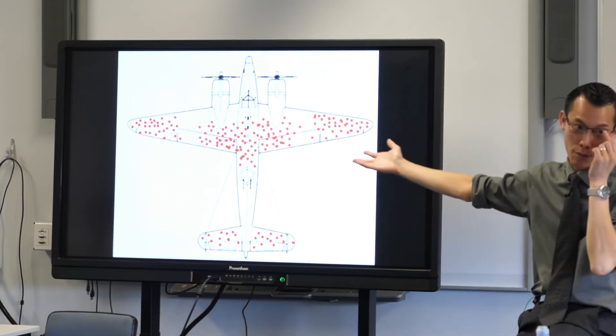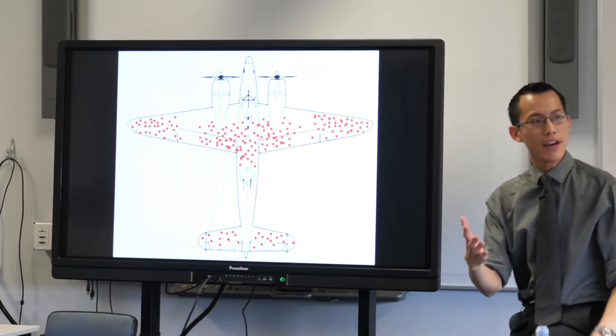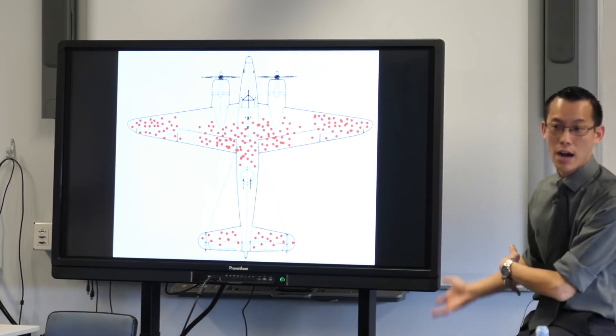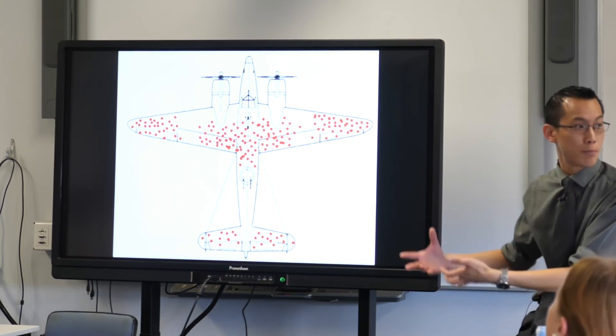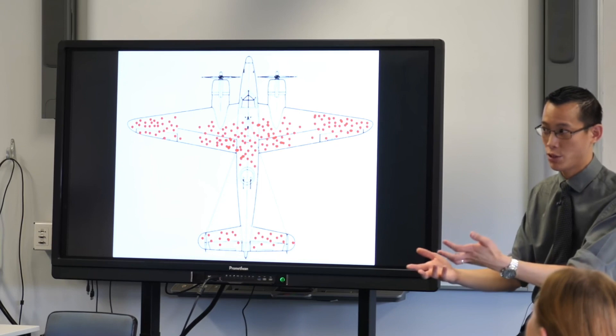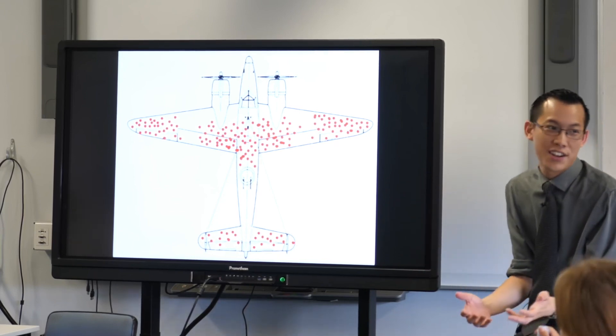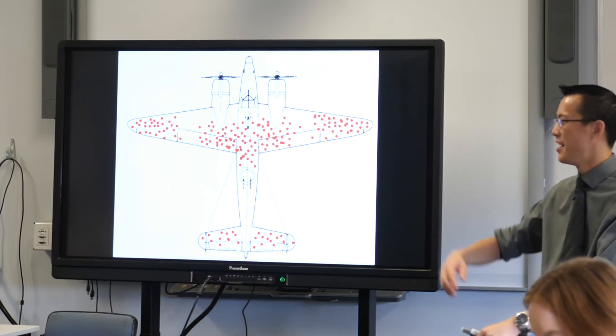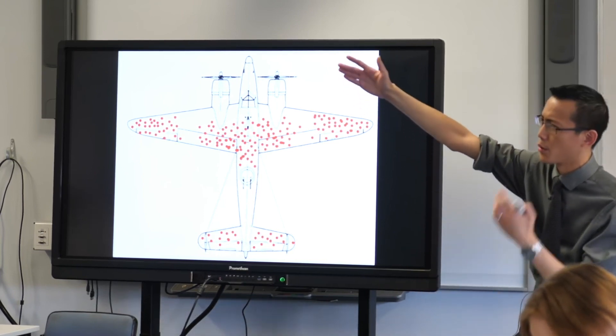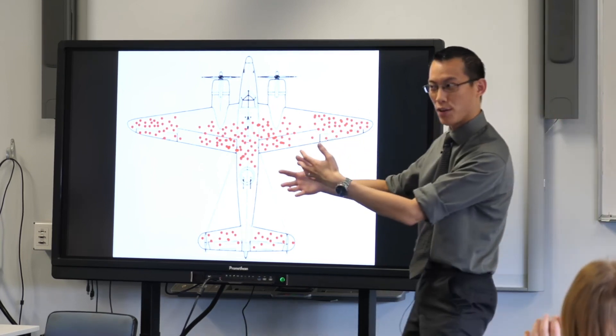Now, when you're designing fighter or bomber aircraft like they were in the Second World War, you kind of have this tension between two different things. You want your aircraft to be armoured. You want to protect your aircraft because then they'll come back. And that's really good. But you don't want too much armour. Why not? Because then you can't fly. You can't take off. You have less range, so you can't go to a further target or things like that. So you want enough armour but not too much.